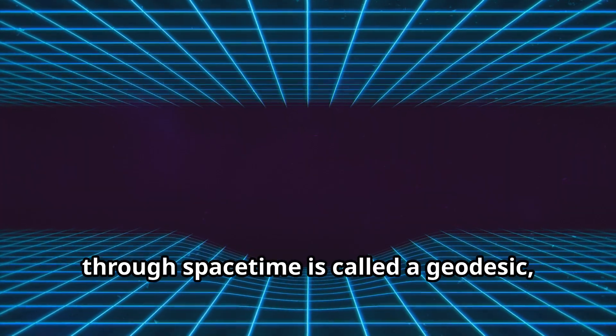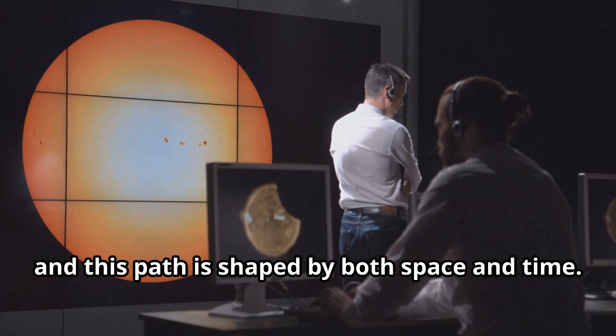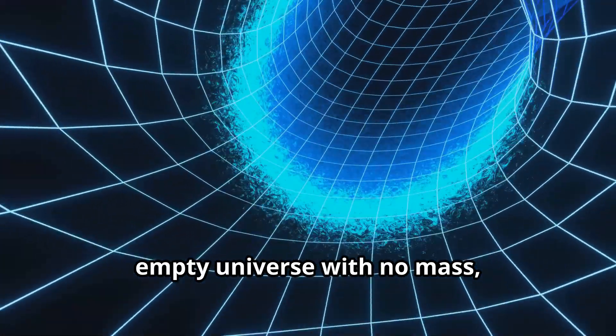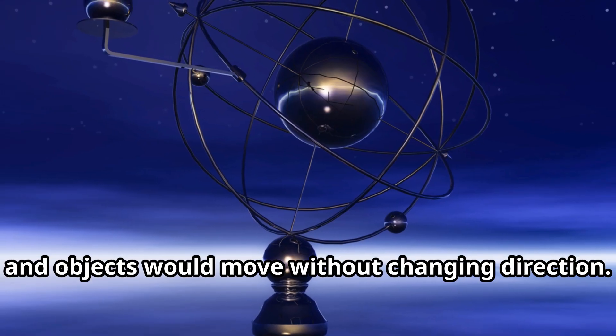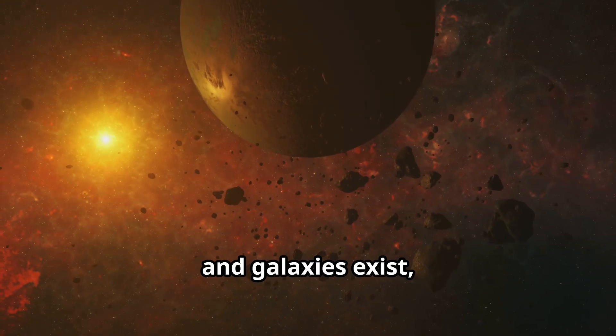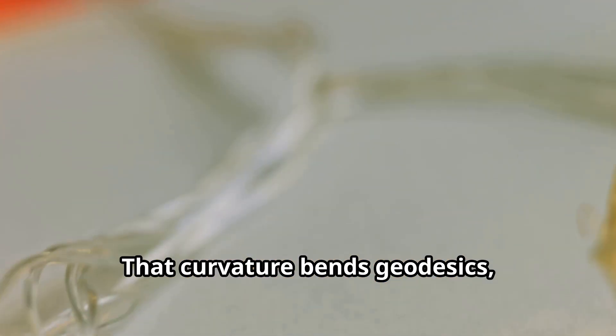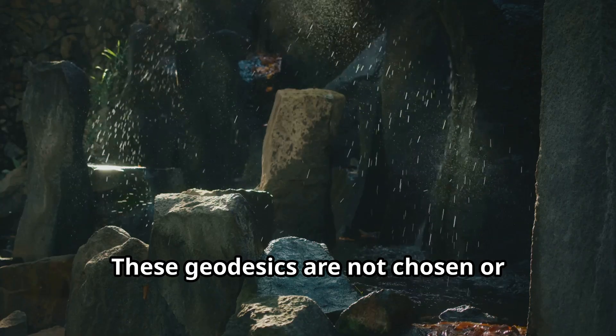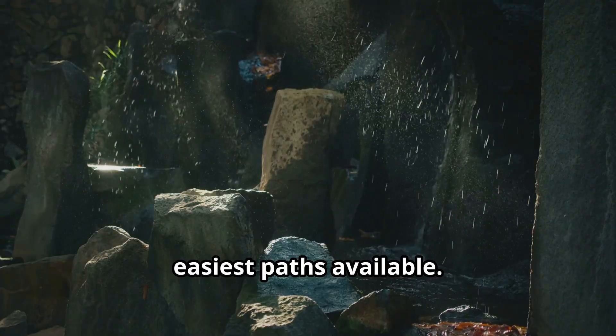The natural path that objects follow through space-time is called a geodesic, and this path is shaped by both space and time. In a flat, empty universe with no mass, these paths would be straight lines and objects would move without changing direction. But in our universe, where massive planets, stars, and galaxies exist, space-time is curved. That curvature bends geodesics, and everything from falling apples to orbiting moons follows them. These geodesics are not chosen or forced. They are simply the smoothest, easiest paths available.